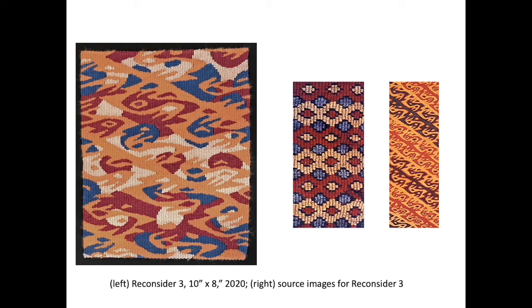The design for Reconsider 3 incorporates details from two Andean textiles: a band with a repeated bird motif on the far right, and a geometric design in the middle. The two images are combined in Photoshop — the textile with the bird motif sits on top of the geometric pattern tapestry, set to bleed through in the darker values so that the geometric pattern shows through in the darker areas. My goal is that the individual components are recognizable, but that the ways in which I combine them create something new.